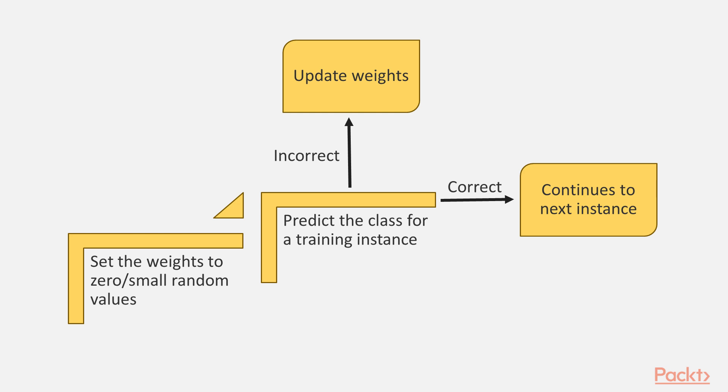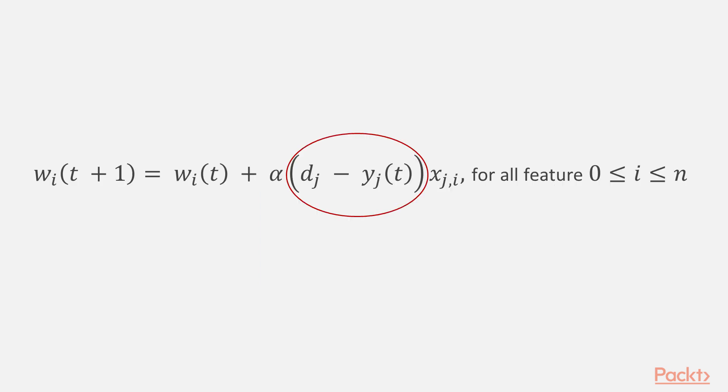More formally, the update rule is given here. For each training instance, the value of the parameter for each feature is incremented by alpha times dj minus yj of t multiplied by xji.